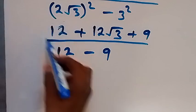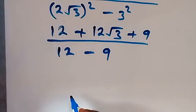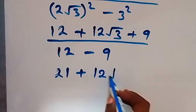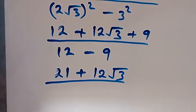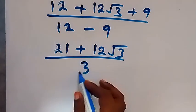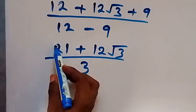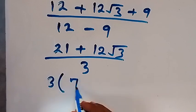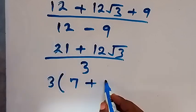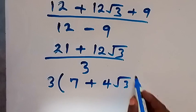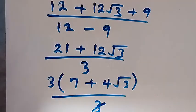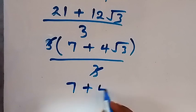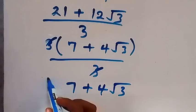Simplifying: numerator is 12 plus 12 root 3 plus 9, and denominator is 12 minus 9 which equals 3. So we have 21 plus 12 root 3 all divided by 3. Canceling 3 from numerator and denominator, we are left with 7 plus 4 root 3, which is our final answer.